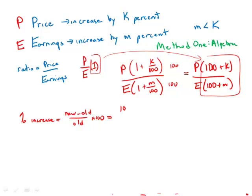The new is (100 + K)/(100 + M), that ratio, minus the old which is 1. To get a common denominator, we write (100 + M)/(100 + M) for 1.